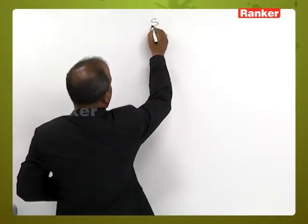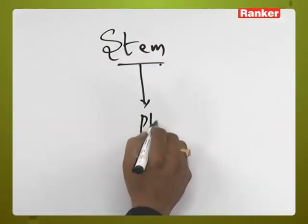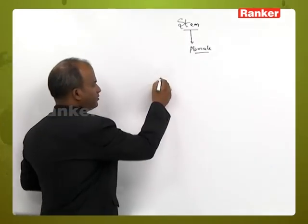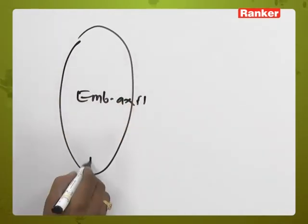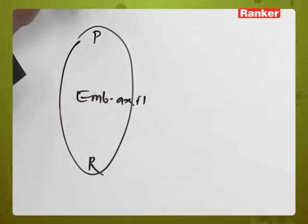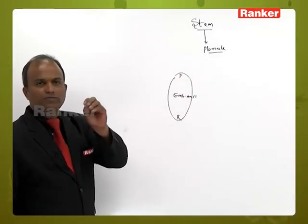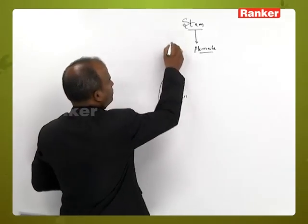Next, we go to another topic: the stem. The stem develops from the embryonal axis of the germinating seed. Specifically, the stem always develops from the plumule. Think of the germinating seed with its embryonal axis — the radicle develops into the root system, while the plumule develops into the stem.